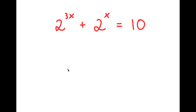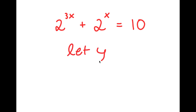So in this problem, I have 2 to the power of 3x plus 2 to the power of x is equal to 10. I'm going to first start by letting y equal 2 to the power of x.